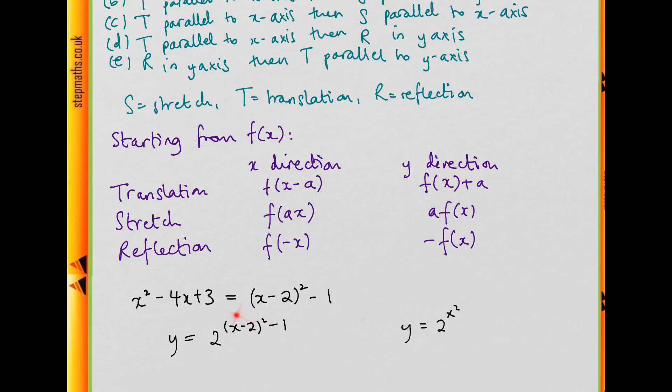Hopefully you can see now that we've got a translation here using this rule. But what about this minus 1 here? It's not a translation in the x direction—that's what's in this bracket here. And it's not a translation in the y direction either, because otherwise I'd have plus 1 added to the whole thing like this. So what can we do about that?